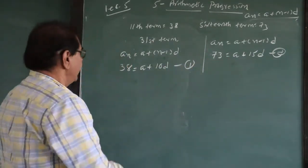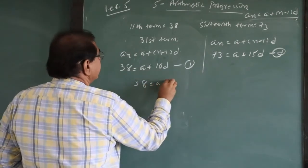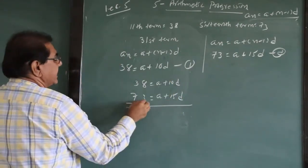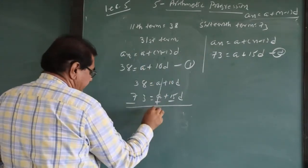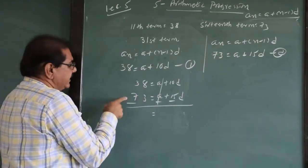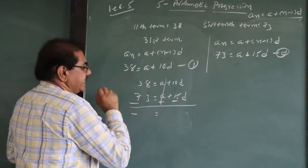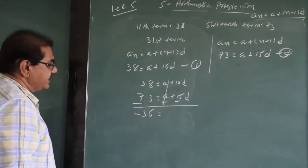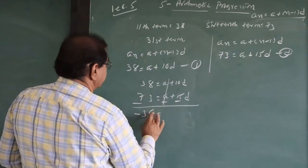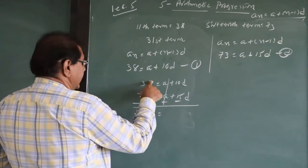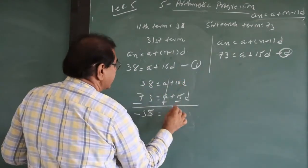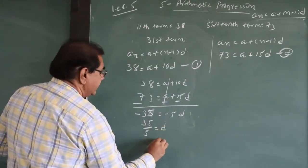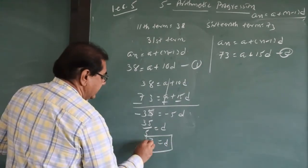I solve these two equations by subtracting. Equation 1: 38 = A + 10D. Equation 2: 73 = A + 15D. Subtracting: A - A cancels. 38 - 73 = -35, and 10D - 15D = -5D. So -35 = -5D, which gives D = 35 ÷ 5 = 7.